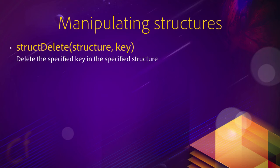One function is called structDelete(). In the parenthesis, we have to tell two things to that function: the name of a structure and the name of a key. What that function does is delete the specified key in the specified structure. So if I invoke that function and say structDelete(stuser, 'firstname'), I will delete the firstname key inside of the stuser structure, and I will end up with a stuser structure with only two remaining pieces of information, two keys.